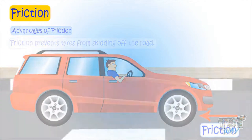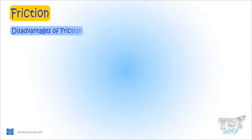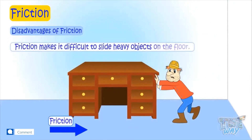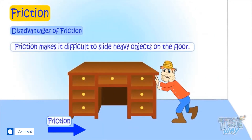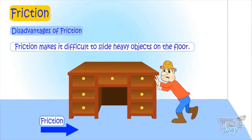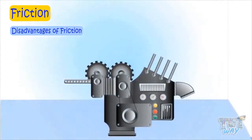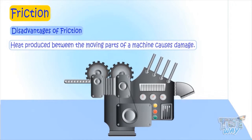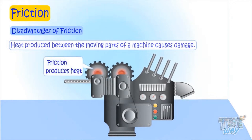Now let's learn the disadvantages of friction. Friction makes it difficult to slide heavy objects on the floor. Every machine has several parts that move together or rub against each other, because of which a lot of heat is produced in the machine and damages the machine.